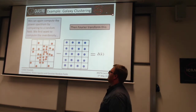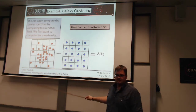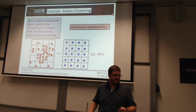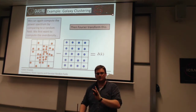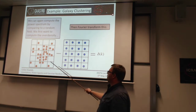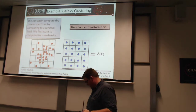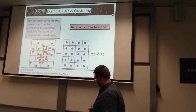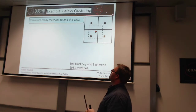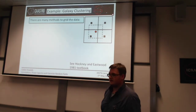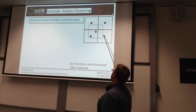There are lots of ways you can grid your data, and unlike in real space where you're doing a pure count over how many galaxies there are, how you actually grid the data will affect your Fourier transform. There isn't even one right answer on how to grid the data in the first place. Here I've got my data points and my grids — I could assign each point to the nearest grid cell, or I could weight it over the nearest grid cells.